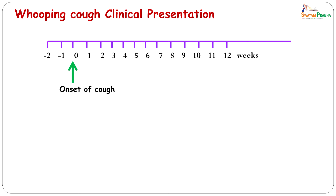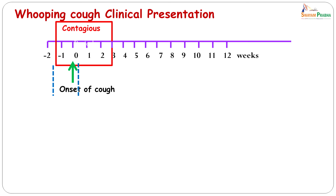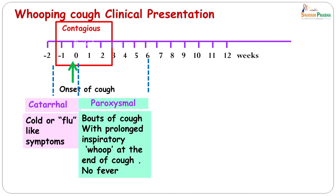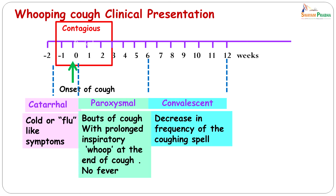If we look at a timeline with 0 as the onset of cough: the infectious period is about 10 days before the onset of cough till about 3 weeks. This period — 10 days before the cough till its onset — is called the catarrhal stage, where the child will have cold or flu-like symptoms. From week 0 to week 6 is the paroxysmal stage, where there will be bouts of cough with prolonged inspiratory whoop at the end, with no fever or very mild fever. From week 6 to week 12 is the convalescent phase, where there is a decrease in the frequency of coughing spells.